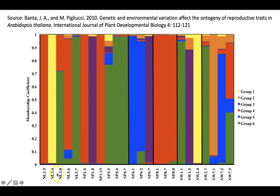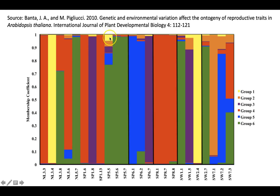When reading these plots, you want to read up and down a column — there's no helpful line to keep your eyes within a column, so you just have to know that one column is one individual. Have a look at this individual here: it has a very mixed ancestry, with a substantial contribution from group six, but also non-trivial amounts from group five, group three, group two, and group one, and so forth.